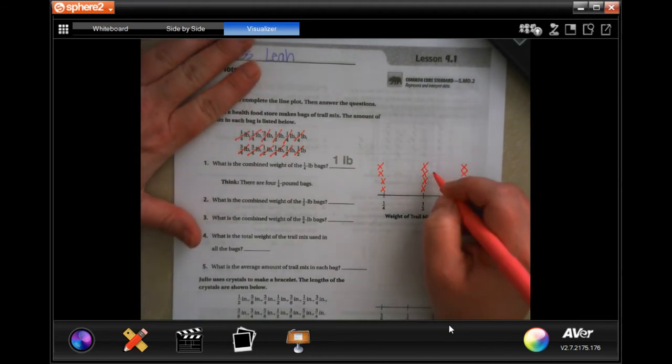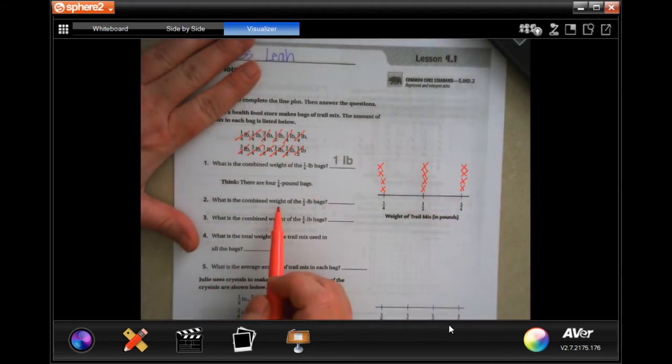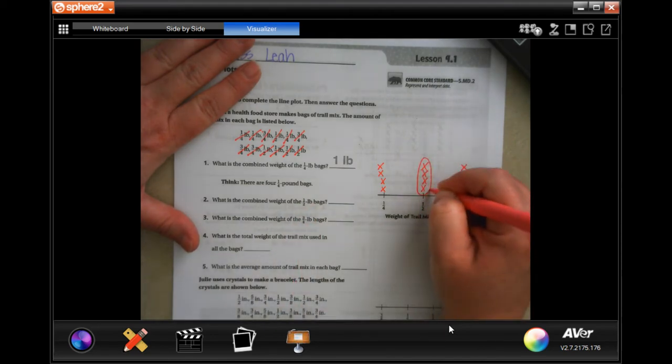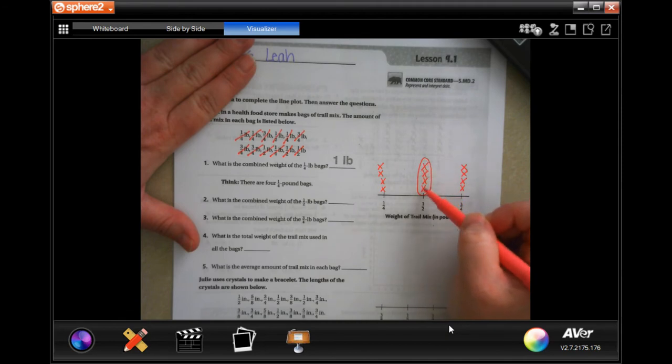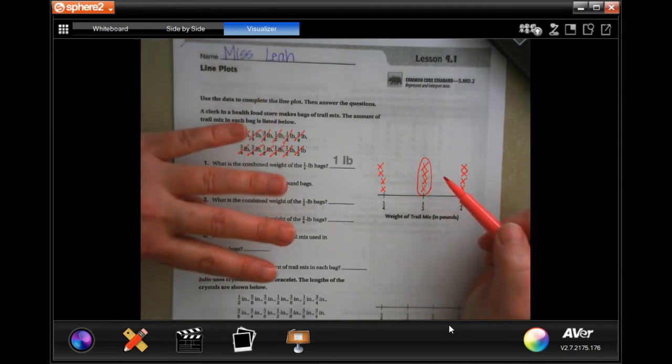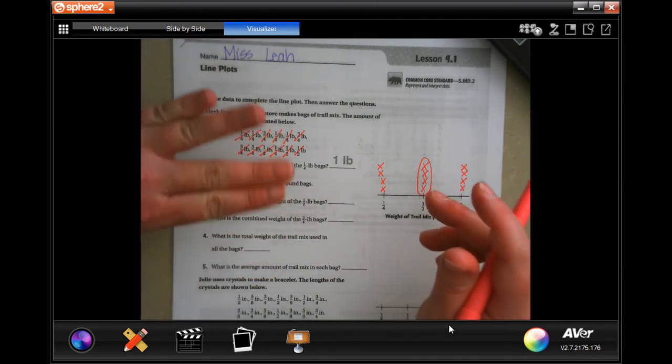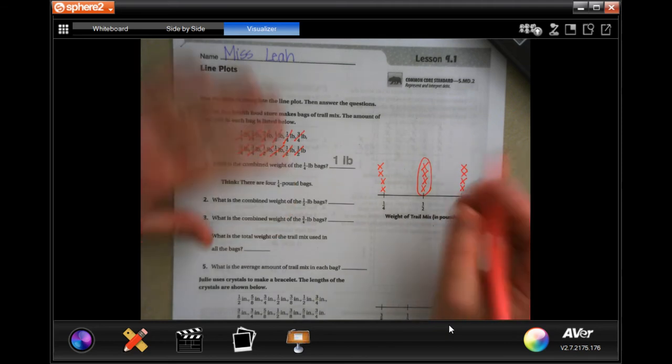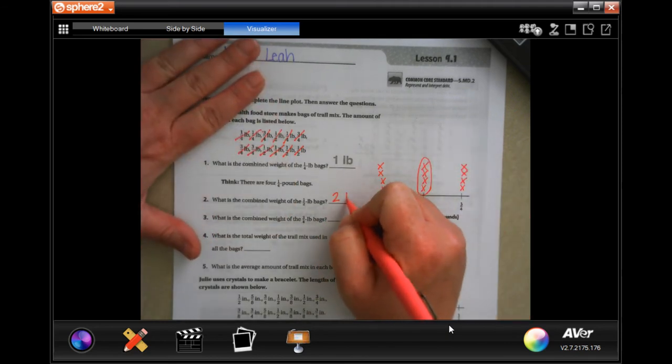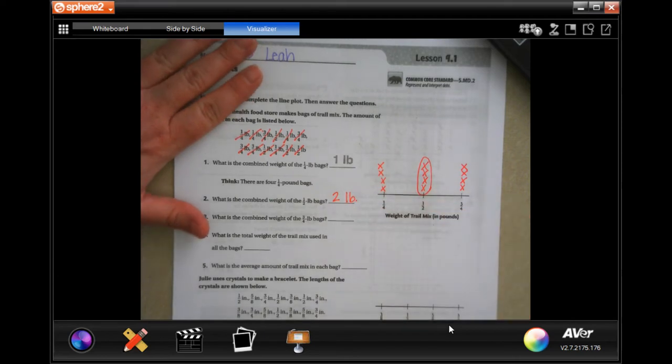This wants to know what the combined weight of the half-pound bags is. These are the half-pound bags, and when you have one, two, three, four halves, think of four halves of a sandwich. If you put two of those halves together, you have two. So, two pounds.